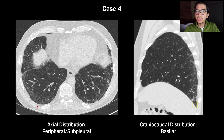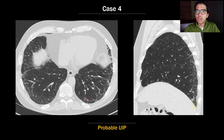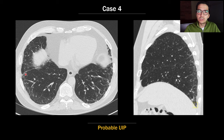This fourth case has a bit more disease: peripheral and subpleural fibrosis with reticulation, basilar predominant on the sagittal. There is a little ground glass opacity, but it is confined to the areas with reticulation. I would likely call this probable UIP, though a colleague might call it indeterminate — and if I'm on the fence, I might look at additional clinical history like the patient's age and smoking history to tip the scales.